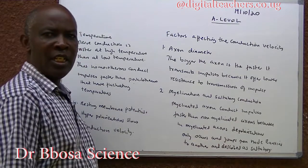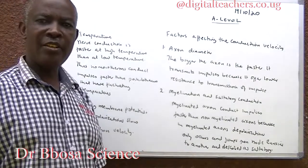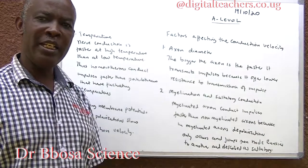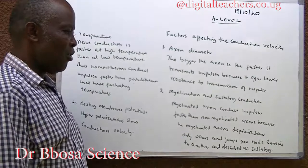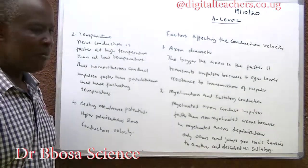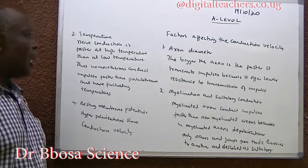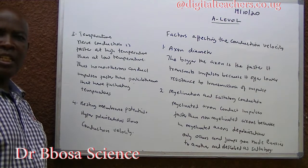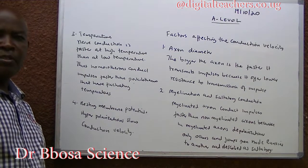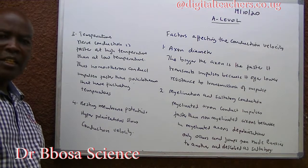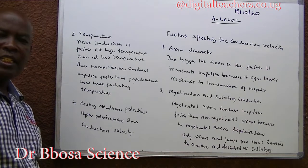Two: myelination and saltatory conduction. Myelinated axons conduct impulses faster than unmyelinated axons, because depolarization in myelinated axons only occurs at the nodes of Ranvier, and the conduction is said to be saltatory. Three: temperature. Nerve conduction is faster at higher temperatures than at low temperatures. For this reason, homoiotherms maintain a high body temperature and conduct impulses faster than poikilotherms, which have fluctuating temperatures.